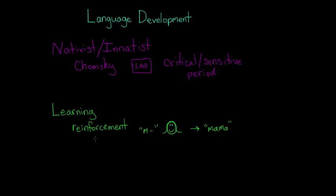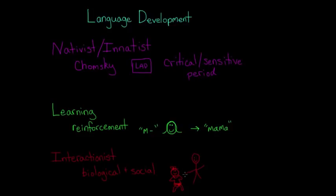So we have another theory called the interactionist approach. Sometimes this is called the social interactionist approach because these theorists believe that biological and social factors have to interact in order for children to learn language. So they would say that children strongly desire to communicate with others, such as the adults in their lives, and that desire motivates them to learn to communicate via language.